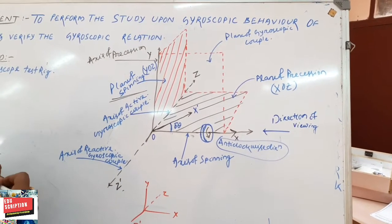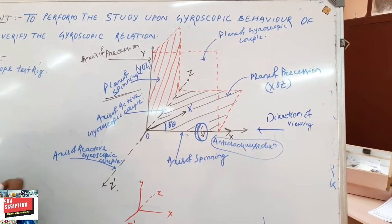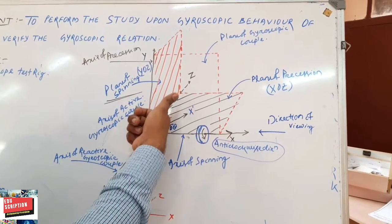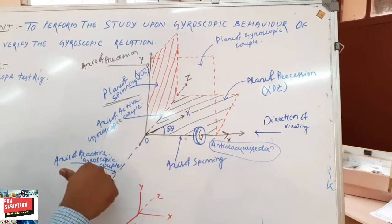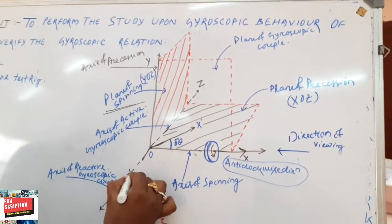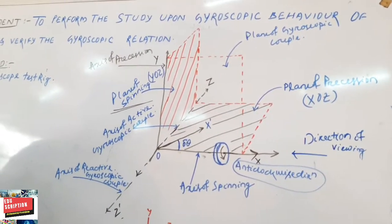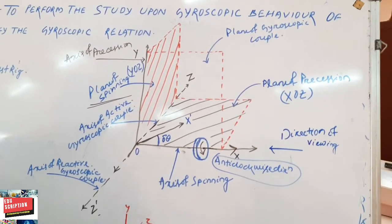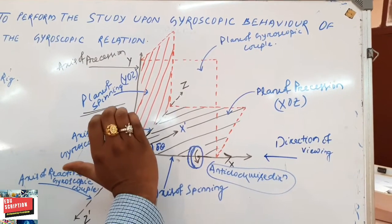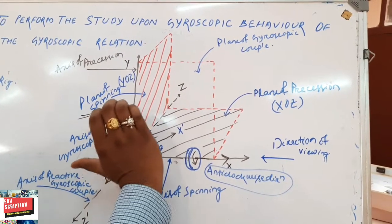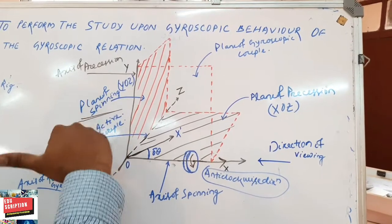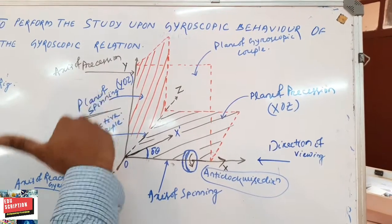Whenever we take the consideration of the active gyroscopic couple, the body is actually getting balanced by the reactive one. So the reactive one is to be considered. Applying the right-hand screw rule, this direction will show the couple direction.